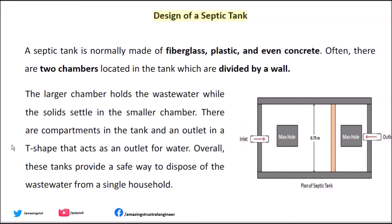Design of a septic tank: a septic tank is normally made of fiberglass, plastic, or even concrete. Often, there are two chambers located in the tank which are divided by a wall. The larger chamber holds the wastewater while the solids settle in the smaller chamber. There are compartments in the tank and a T-shaped outlet that acts as an outlet for water. Overall, these tanks provide a safe way to dispose of the wastewater from a single household.